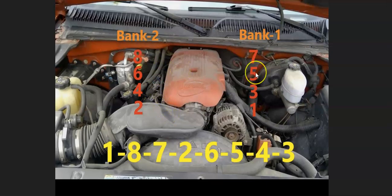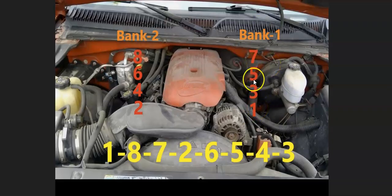Bank one is going to be on the driver's side, and bank two is going to be on the passenger side. If you ever need to know what side of an engine is bank one or bank two on a V6 or V8 engine, just find the number one cylinder — that side of the engine is going to be bank one, and the opposite is going to be bank two.